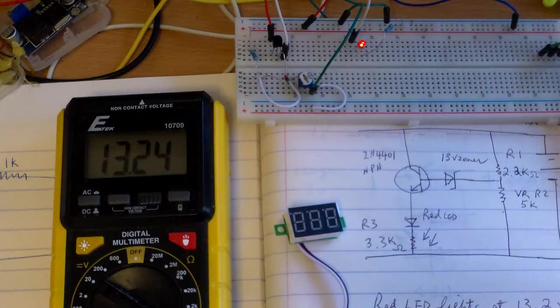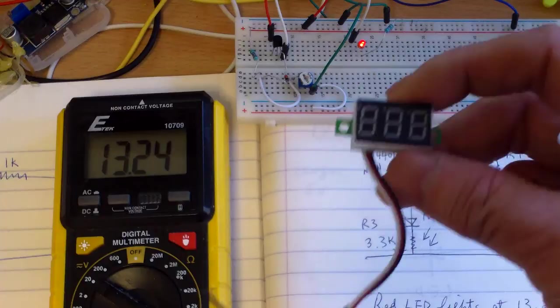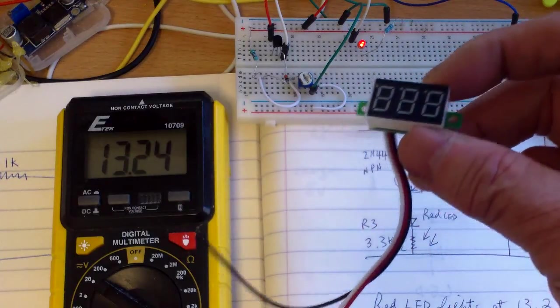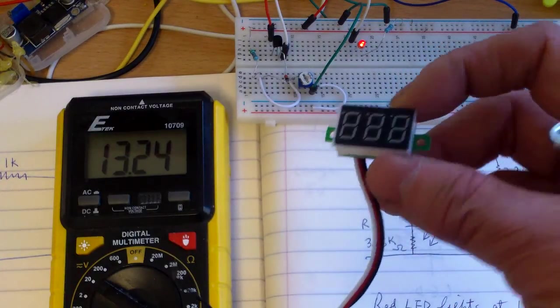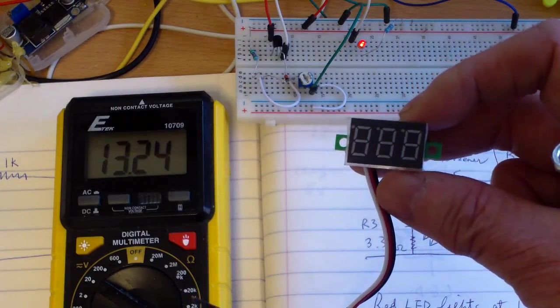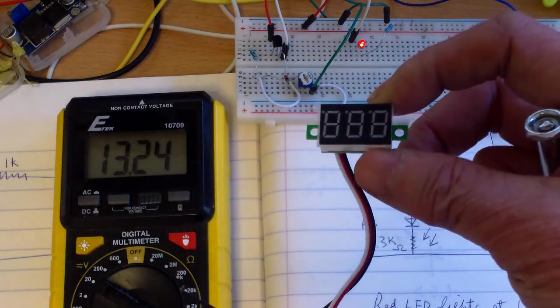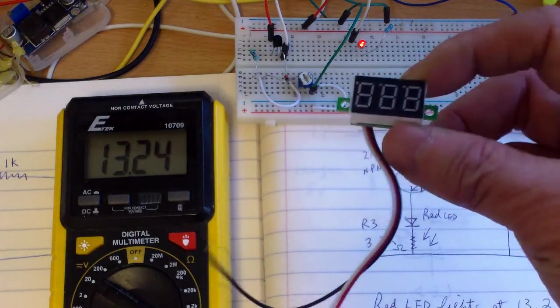The easiest way to do that is to use a digital voltmeter like this. This is only a dollar and a half maybe, and if you attach it to your positive and negative of your battery, it will indicate the voltage.